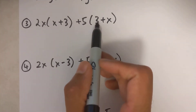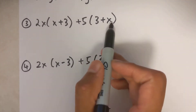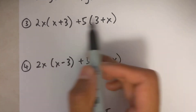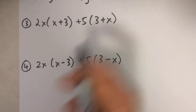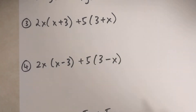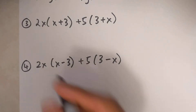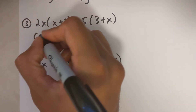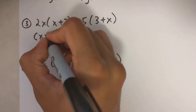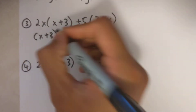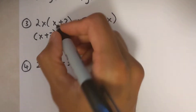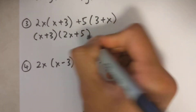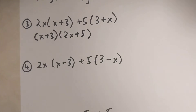In this question, if I look at the brackets I have x plus 3 on one side and 3 plus x on the other — but x plus 3 and 3 plus x are the exact same thing. So you can write the bracket as x plus 3 or 3 plus x, it doesn't matter, and then your final solution is going to be this.